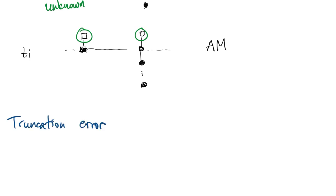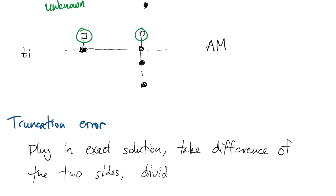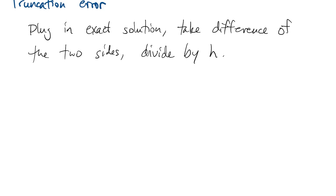We can define truncation error for multi-step methods much the same as we did for Runge-Kutta. You plug in the exact solution u-hat, take the difference of the two sides of the formula, and divide everything by h.